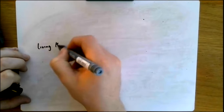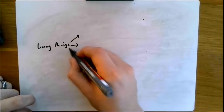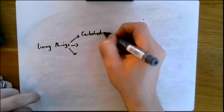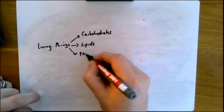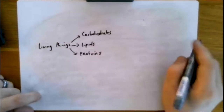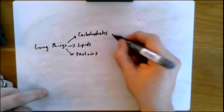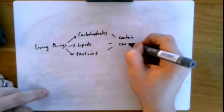Carbon and hydrogen are found in living things. When we looked at the formation of crude oil, we know that crude oil — which is made of hydrocarbons — comes from living things. All three of what we call the macromolecules — macro means big — so the big molecules that make up living things: carbohydrates, lipids, and proteins — all three contain carbon and hydrogen.